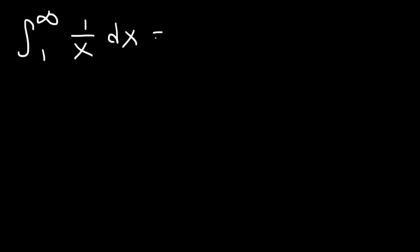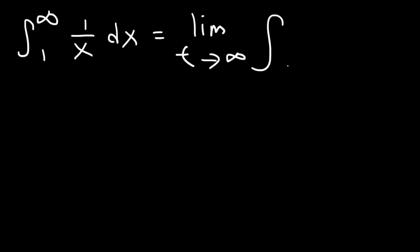First, we need to replace infinity with some variable, which in this case will be t. So we're going to express it as a limit — the limit as t approaches infinity of the integral from 1 to t of 1 over x dx.